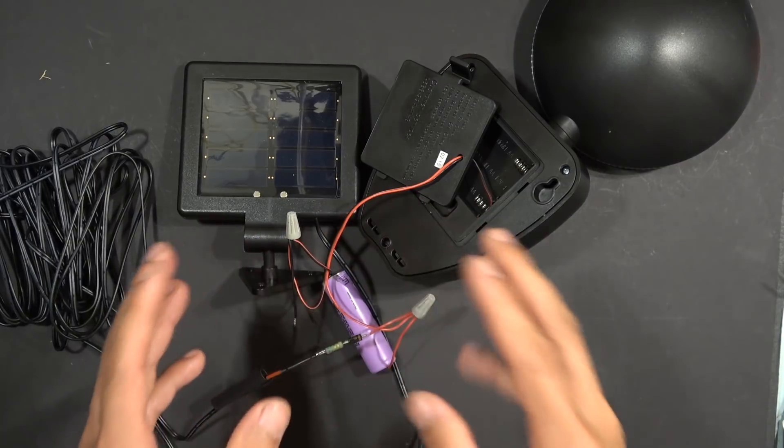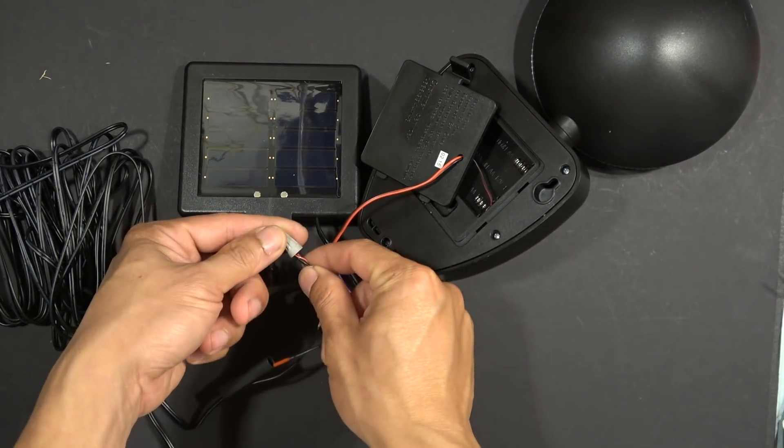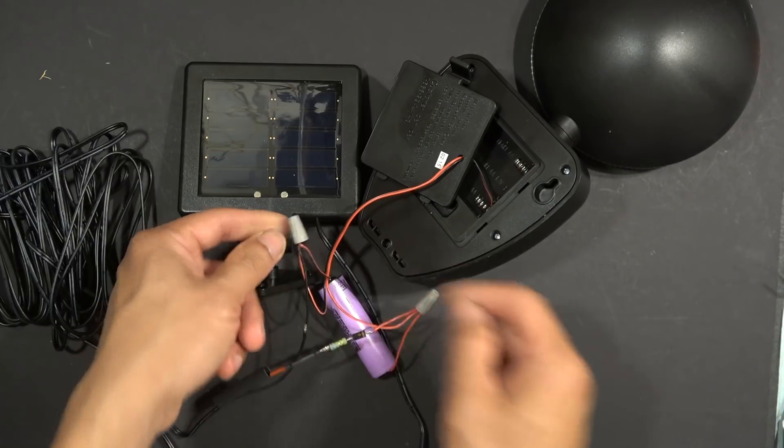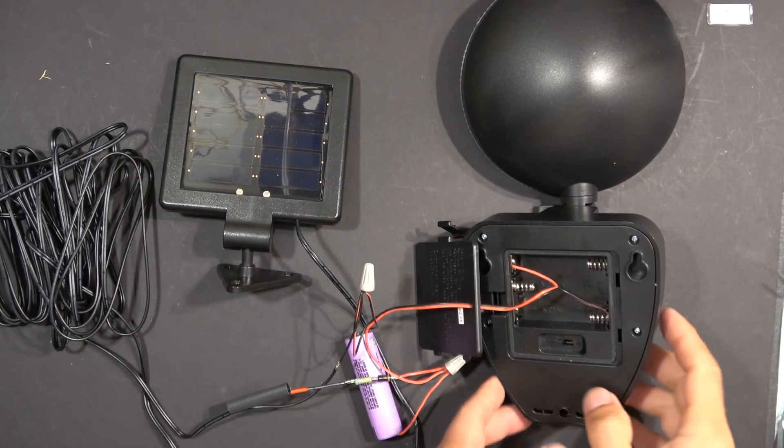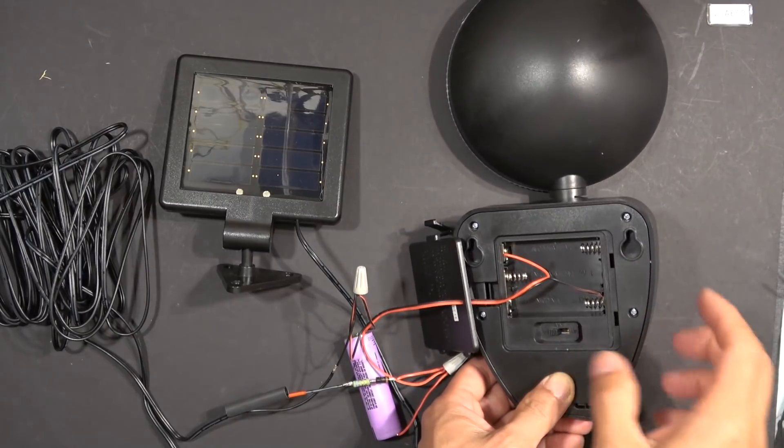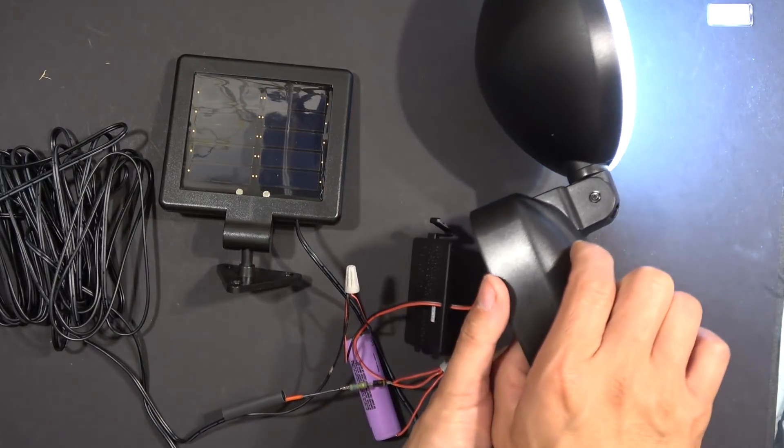They are connected together like this: the battery, the light unit, and the solar panel—all three units connected together, all the negative terminals together, all the positive terminals together. Let's try and see if it works. I got a switch on the back here—turn it on, here we go.